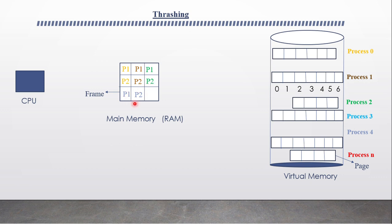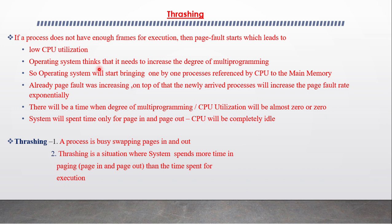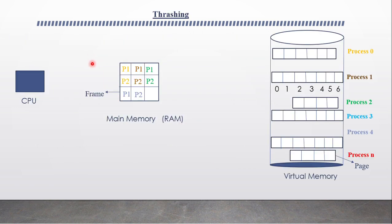Similarly, it will happen for all processes. So if we increase the degree of multiprogramming, the drawback is that many page faults occur, and because of page faults, page replacement will also happen since the number of free frames available in main memory is very small. If the process does not have enough free frames in memory for execution, page faults will start, which will lead to low CPU utilization.